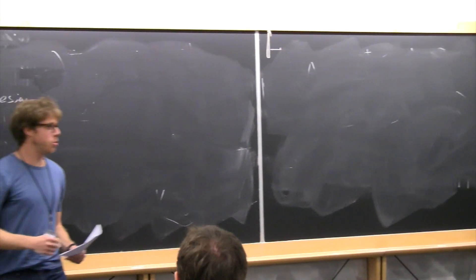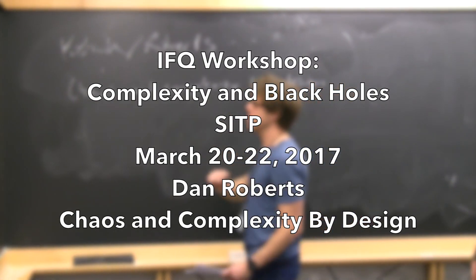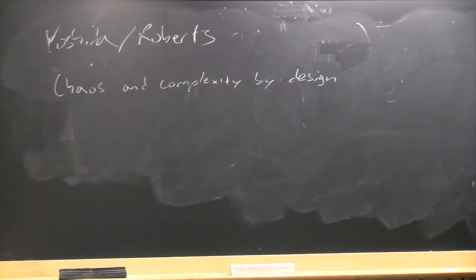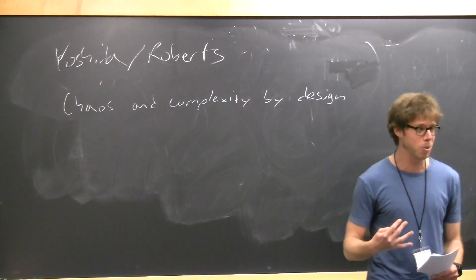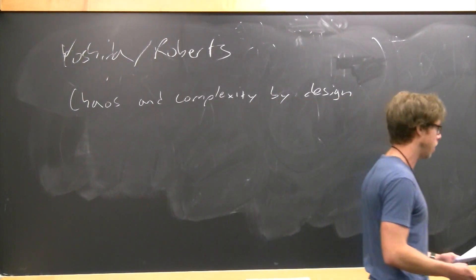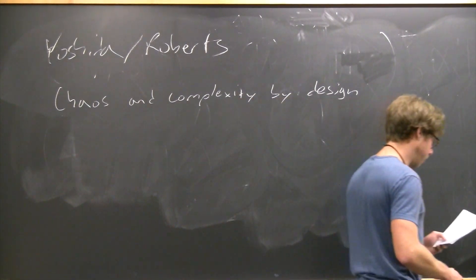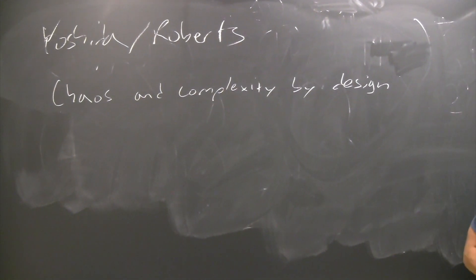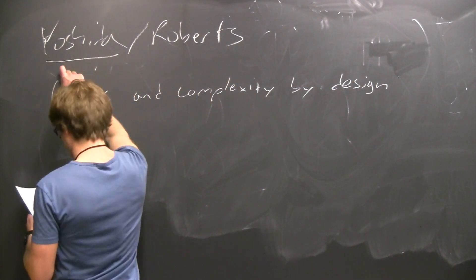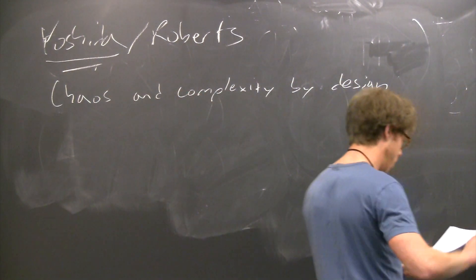Well, Lenny, you declined to announce us, but a lot of it was labeled Yoshida Roberts, and it seemed clear that the organizers were thinking that we should talk about a specific work. That became a strong implication when Adam told me we should talk about a specific work — chaos and complexity by design. Since I'm notoriously known for my ability to follow rules, I'll be giving the Yoshida portion of the talk, labeled first on our paper, and then we'll switch to the Roberts portion where he will tell you about something new.